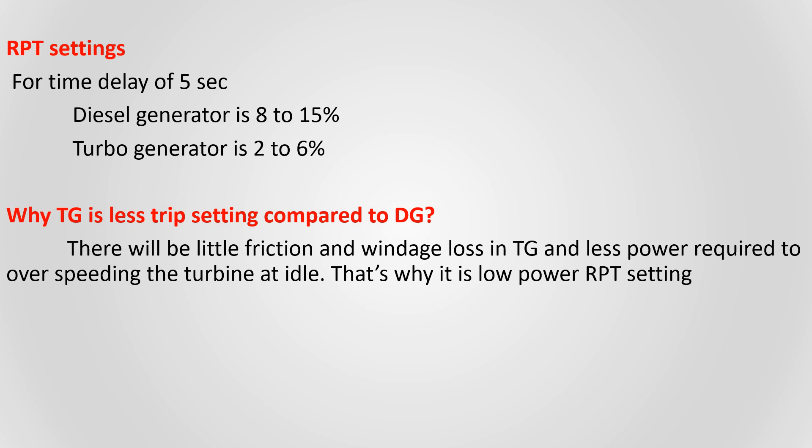A time delay of 5 seconds is used. While paralleling two generators, there will be a power surge and reverse power flow may occur temporarily. So to prevent unwanted reverse power tripping due to power surges, we use a time delay of 5 seconds. The turbo generator has a lower trip setting compared to the diesel generator because the TG has less friction and windage losses, and less power is required to keep the turbine spinning at idle.